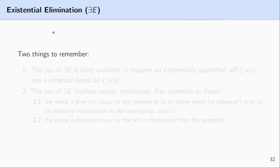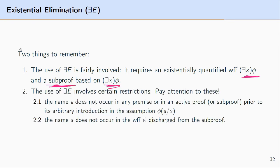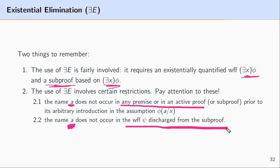There are a couple of things to remember when using existential elimination. Existential elimination is a fairly involved rule — we can't reason directly from an existentially quantified formula to a specific individual. It requires an existentially quantified formula and a sub-proof based upon it. The first restriction is that the name we assume is not found in any premise or any active part of the proof — the name must be completely new. The second restriction is that any names we assume aren't found in the formula being discharged from the sub-proof.